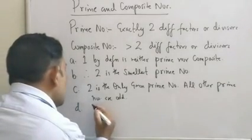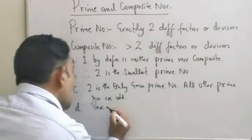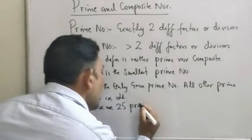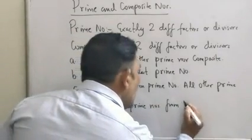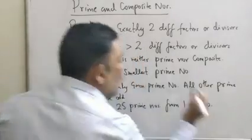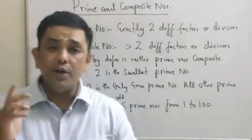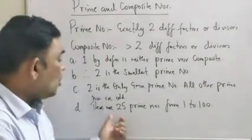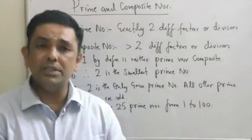What is the fourth? The fourth is: there are 25 prime numbers from 1 to 100. If you count from 1 to 100, you are going to come across 25 prime numbers.